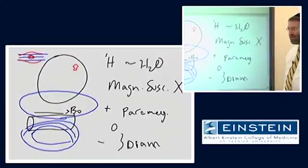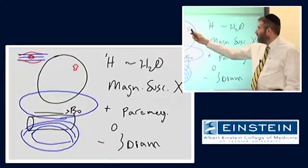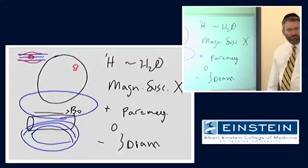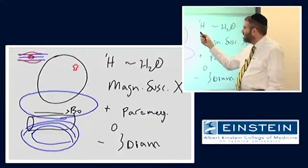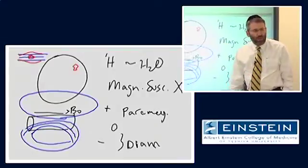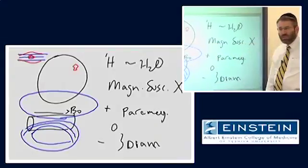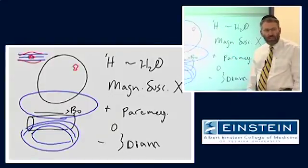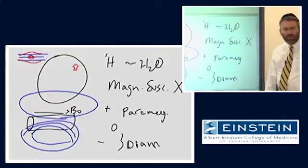That area of calcification, first of all, is not a source of the MR signal. Whatever tissue water might be interspersed within it or around it is a source of our MR signal. But the calcium per se that is in there is not something from which we derive signal. However, because of the magnetic susceptibility of calcium, it will cause variability in the static magnetic field strength.